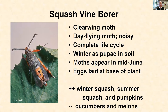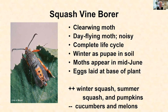Squash vine borer, the second pest, is a moth — but it's not a typical moth in that they tend to be fairly brightly colored and they fly during the daytime. Because it's a moth, it has a complete life cycle, and they spend the winter as pupae down in the soil under where the crop was the previous year. The caterpillars that were inside your squash and pumpkin vines last year moved into the soil, made pupae, and that's where they'll wait and develop and come out in the middle of June to lay their eggs again. After mating, this moth will lay her eggs on the base of the plant.